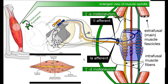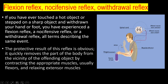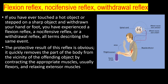The flexor reflex, nociceptive reflex, or withdrawal reflex — these three names describe the same reflex. If you have touched a hot object or stepped on a sharp object and withdrawn your hand or foot, you have experienced this reflex. The protective result is obvious: it quickly removes the body part from the vicinity of the harmful object by contracting the appropriate muscles — usually flexor muscles — and relaxing extensor muscles.